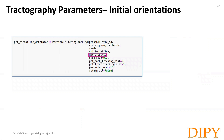When creating your streamline generator, there's a parameter called max_cross. When set to 1, the initial orientation will be the orientation of maximum diffusivity, or the peak with the highest fiber ODF value. If this value is higher, it will start up to that many streamlines, one for each of the peaks at the seed location. Thus, one seed location can generate multiple streamlines.